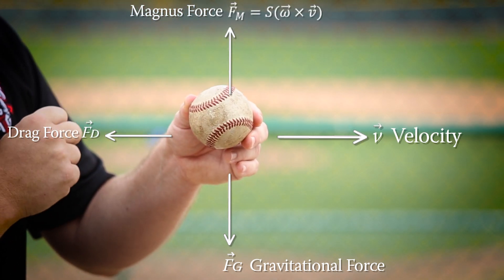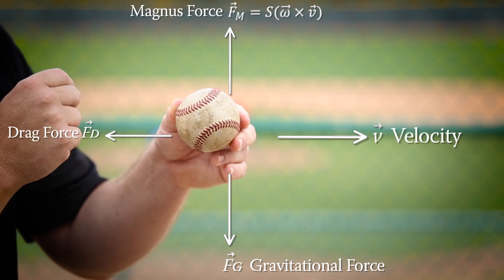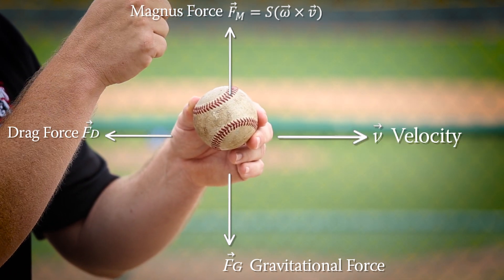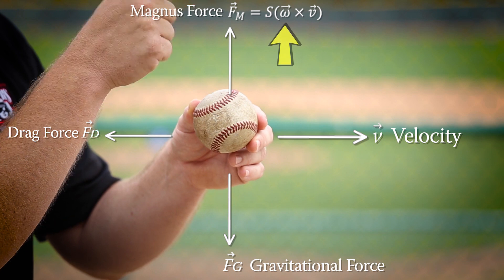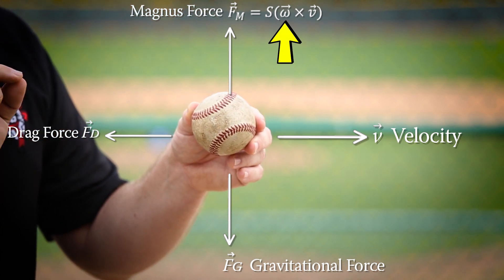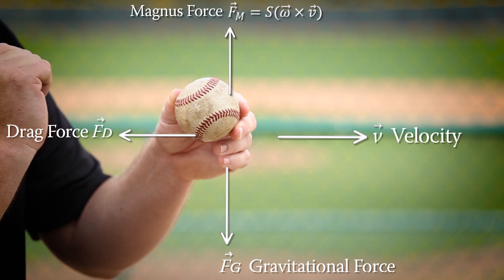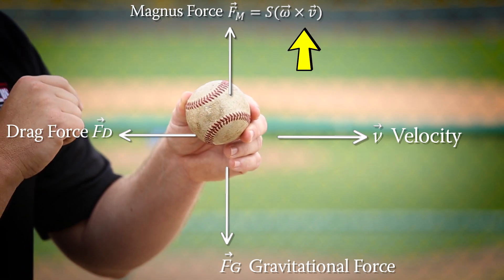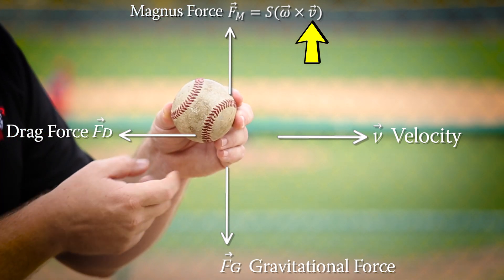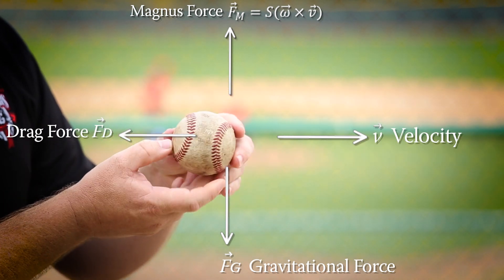There are a couple of key ingredients to focus on with regards to the Magnus Force. It depends on two parameters: this omega symbol — also known as the angular velocity, which is exactly the spin rate — times the translational velocity of the baseball. The Magnus Force depends on these two things.